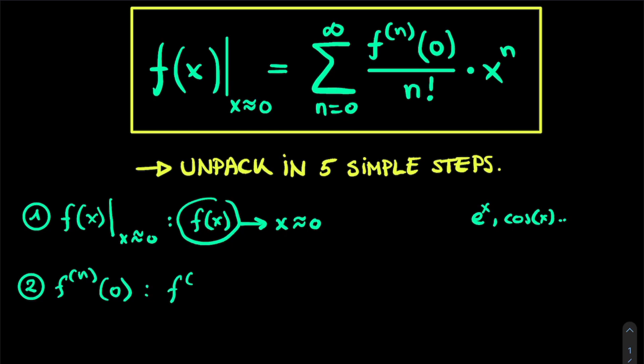Well, f superscript n of x, for example, basically just means the nth derivative. So this can be written as d^n over dx^n of f(x). So we basically take the nth derivative with respect to x of our function f(x).